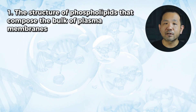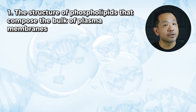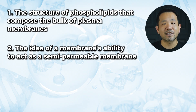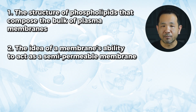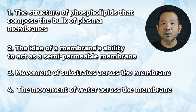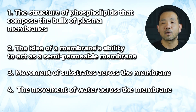Let's set up an outline of how we'll approach this chapter today. First, we'll talk about the structure of phospholipids that compose the bulk of plasma membranes. Then, we'll talk about the idea of a membrane's ability to act as a semi-permeable membrane, which will lead us to movement of substrates across that membrane. Lastly, we'll talk about the movement of water across the membrane. Let's begin by looking at what a cell membrane looks like. In order to do that, we need to review phospholipids.